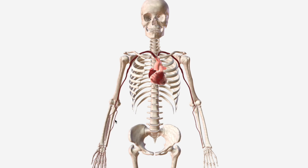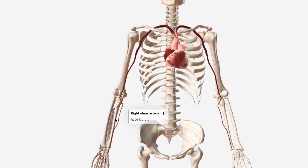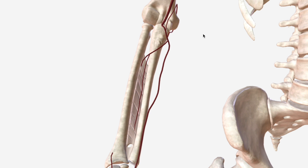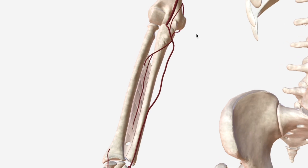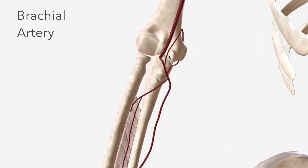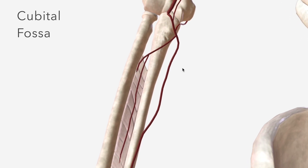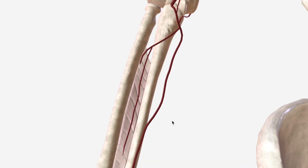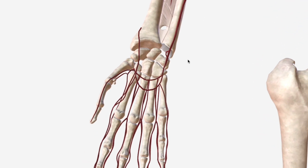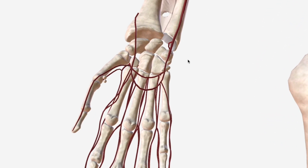Let's talk about the ulnar artery, one of the terminal branches of the brachial artery, commencing at the cubital fossa, coursing down the medial aspect of the forearm, and terminating by division into three branches, which we'll get to in a moment.